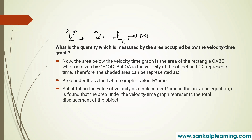What can you say about the motion of an object if its speed-time graph is a straight line parallel to the time axis? If the distance-time graph line is parallel to the time axis, the body is at rest. But if the speed-time graph shows a straight line parallel to the time axis, it means the body is moving uniformly — it is uniform motion.